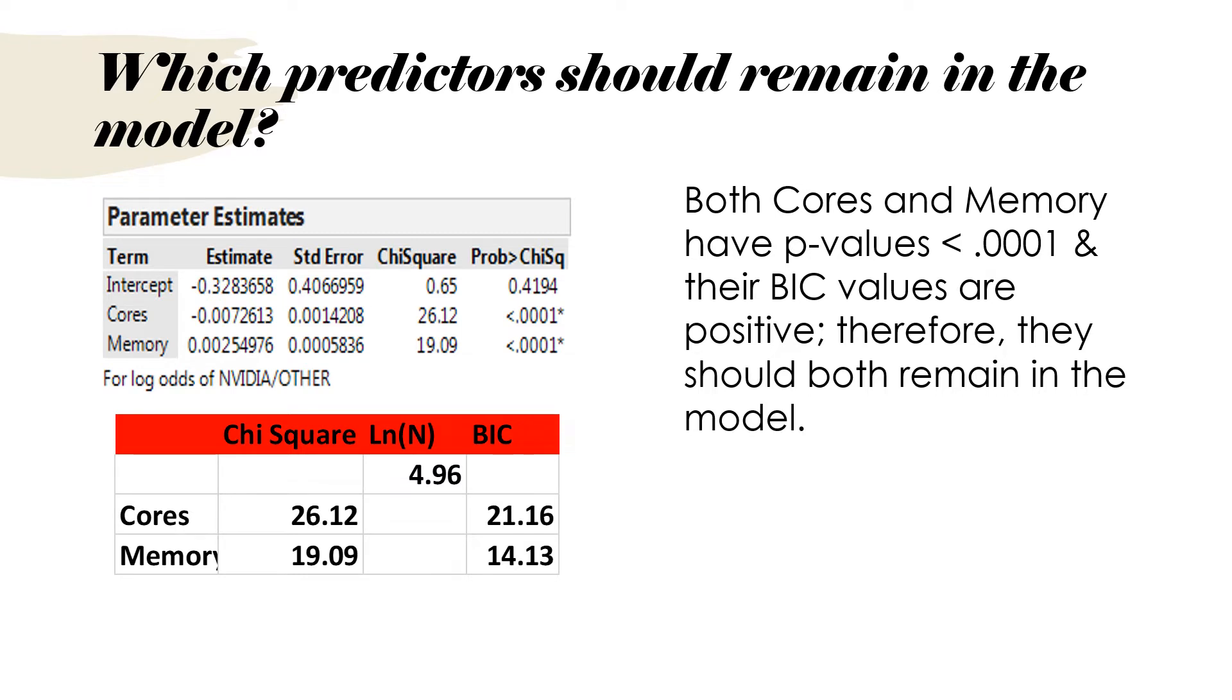But before we say that for sure, we also want to check that the BIC values are positive for each one. What I did is I went through and took the chi-square value for cores minus the log of n and I got BIC of 21.16. Then I took the chi-square score for memory minus the log of n and got BIC of 14.13. They're both positive. Now we're sure that we want to keep both variables.